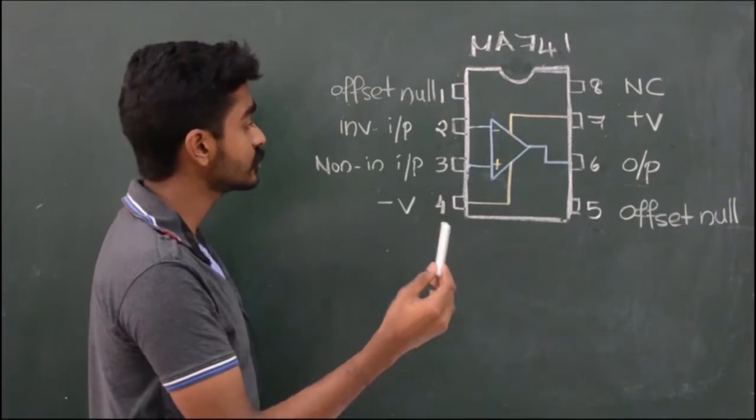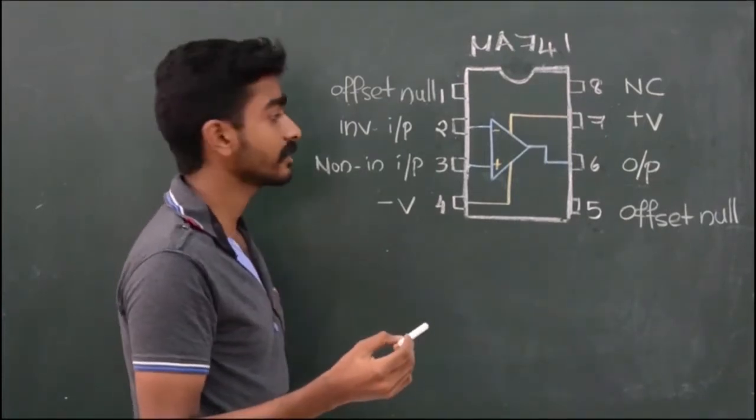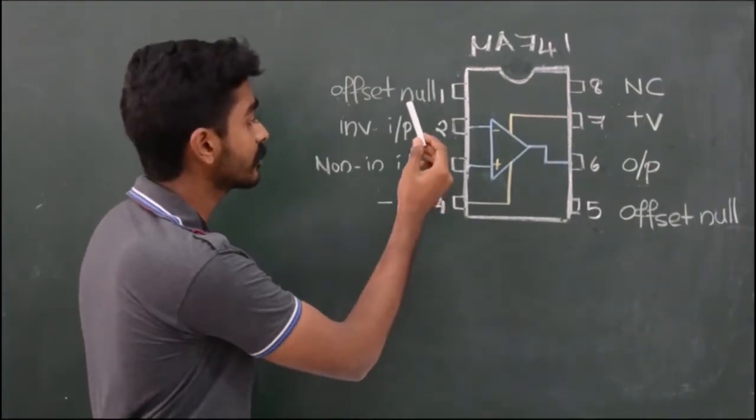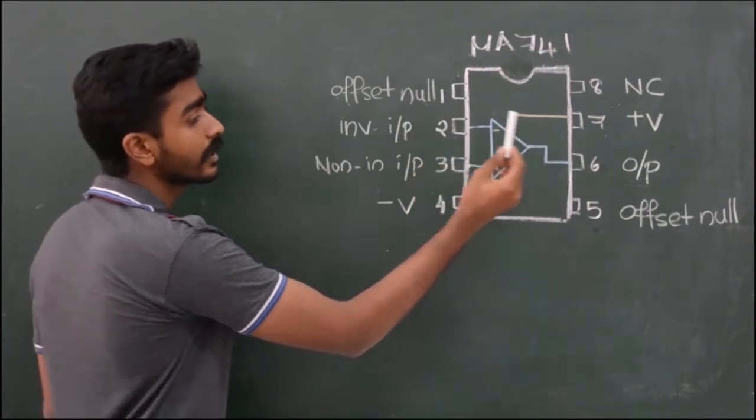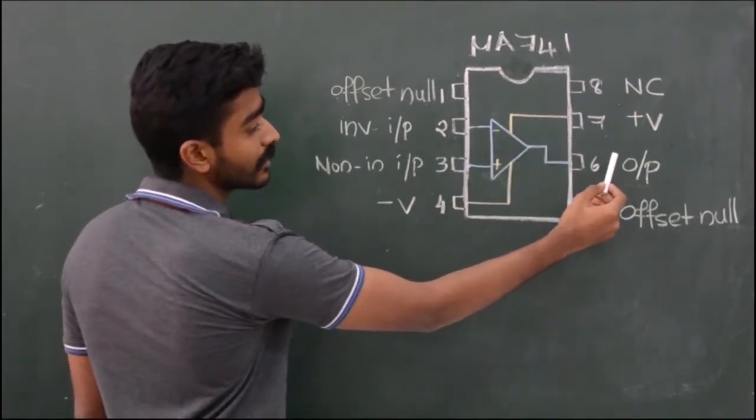When the op-amp is to be configured in non-inverting configuration, the input is applied at terminal 3 and terminal 2 is grounded. The output is obtained at terminal 6.